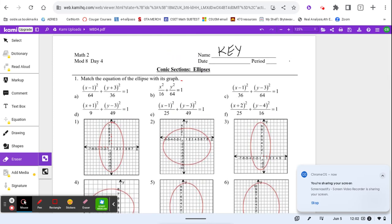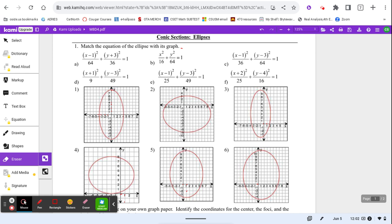Alright, we're going over the key here for the mod 8 day 4, the conic sections ellipses worksheet that was your homework. This top section is asking you to match equations with graphs. Let's first look at this one, because it only has a plain x squared and a plain y squared. I can see this is an ellipse centered at (0, 0). If I check my graphs for which one has center at (0, 0), my only option is number 1.